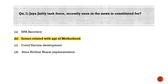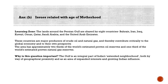The correct answer is option B: issues related with age of motherhood. The terms of reference of the JJJ Task Force are to examine issues related to infant mortality rate, maternal mortality rate, total fertility rate, sex ratio at birth, child sex ratio, and any other issues pertaining to health and nutrition. It also suggests measures for promoting higher education among women, suitable legislations and amendments in existing laws, and a detailed rollout plan with timelines to implement these recommendations.